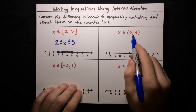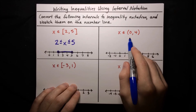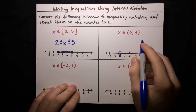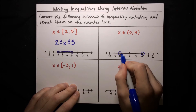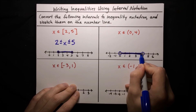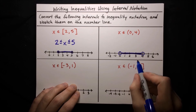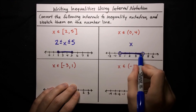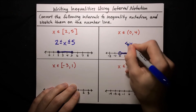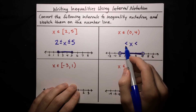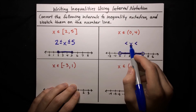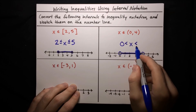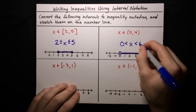For x ∈ (0, 4): parentheses correspond to open circles, so we draw an open circle at 0 and an open circle at 4, with the interval in between. In inequality notation, equality is not allowed because parentheses mean just greater than or less than, not equal to. So x is greater than 0 and less than 4, giving us 0 < x < 4.